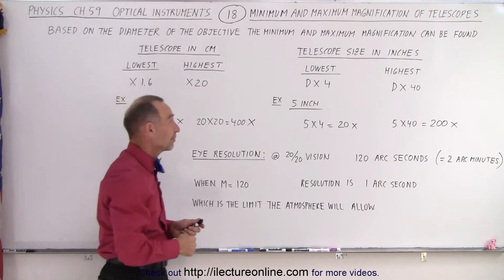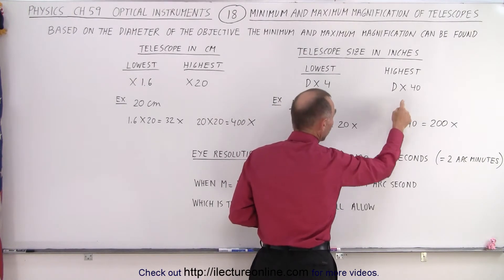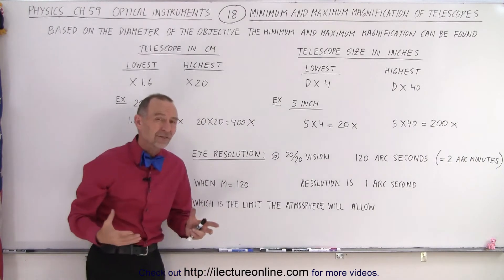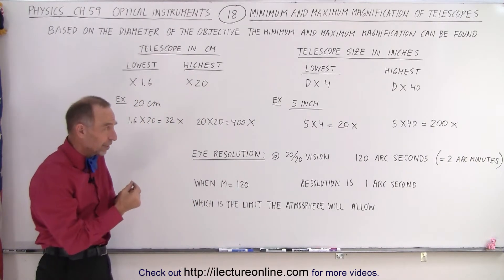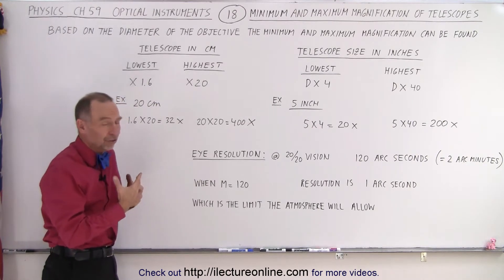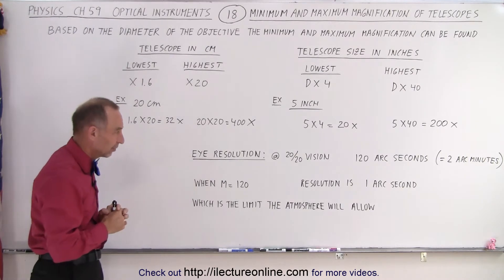The highest setting for magnification, the rule of thumb, is that the diameter of the telescope times 40, or 5 times 40 which would be 200. It really wouldn't make a lot of sense to take a 5-inch telescope and put a special Barlow lens in there to try and get a 400x or a 600x magnification because it wouldn't do you much good when the limitations are in the size of the objective lens.